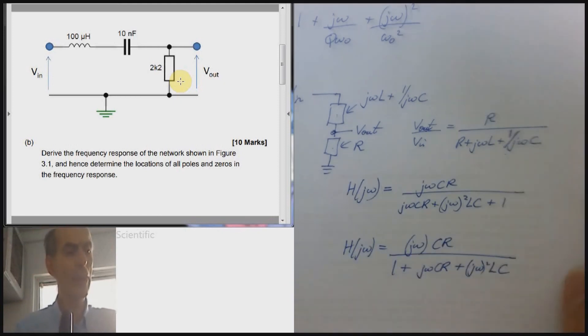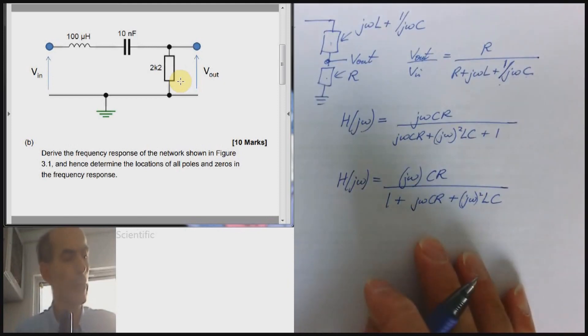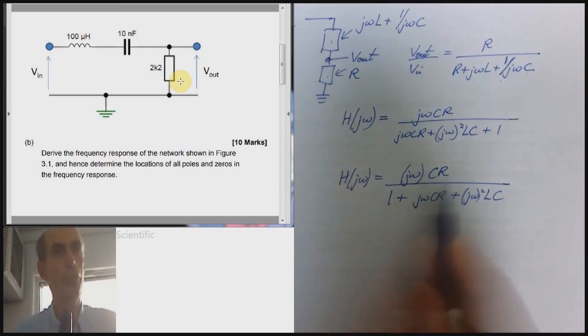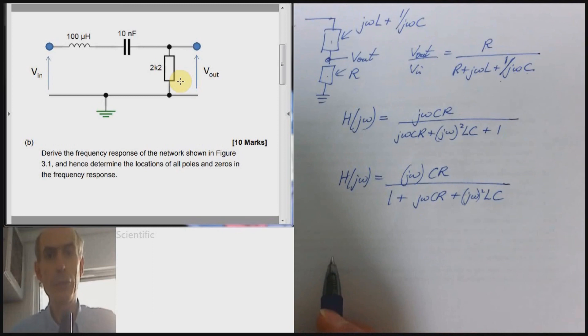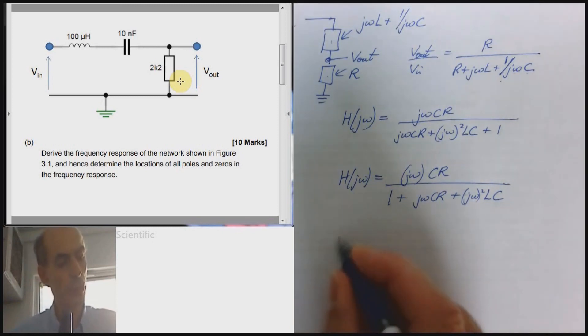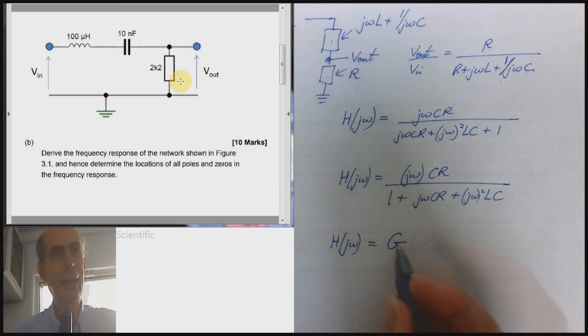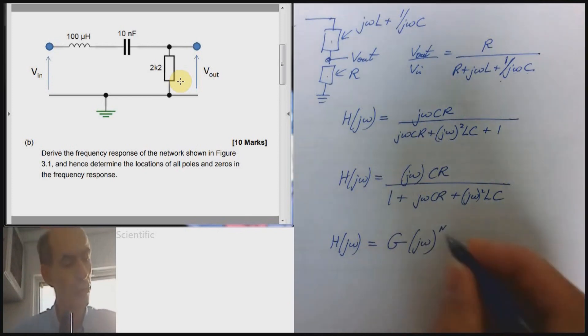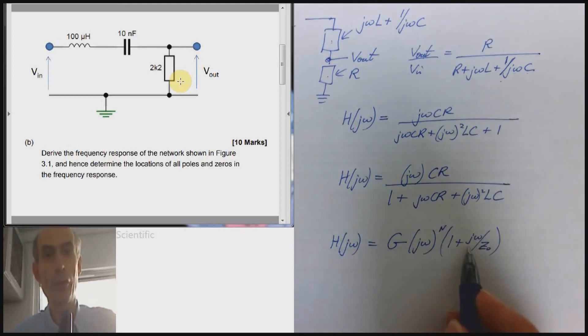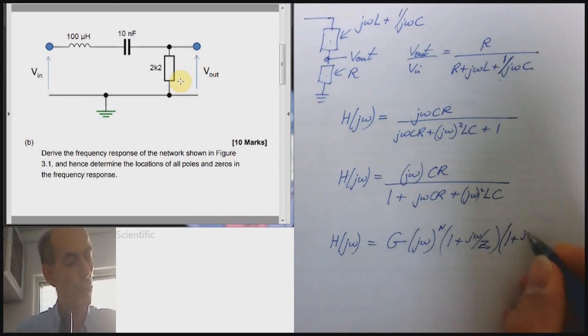Now, we're trying to get this into the standard form of a frequency response. And for a second order system, the standard form that you might remember is this one. Again, jω to the power of n, where n is the number of zeros at zero hertz. 1 plus jω, that's a zero. And there may be other zeros as well. And so on.